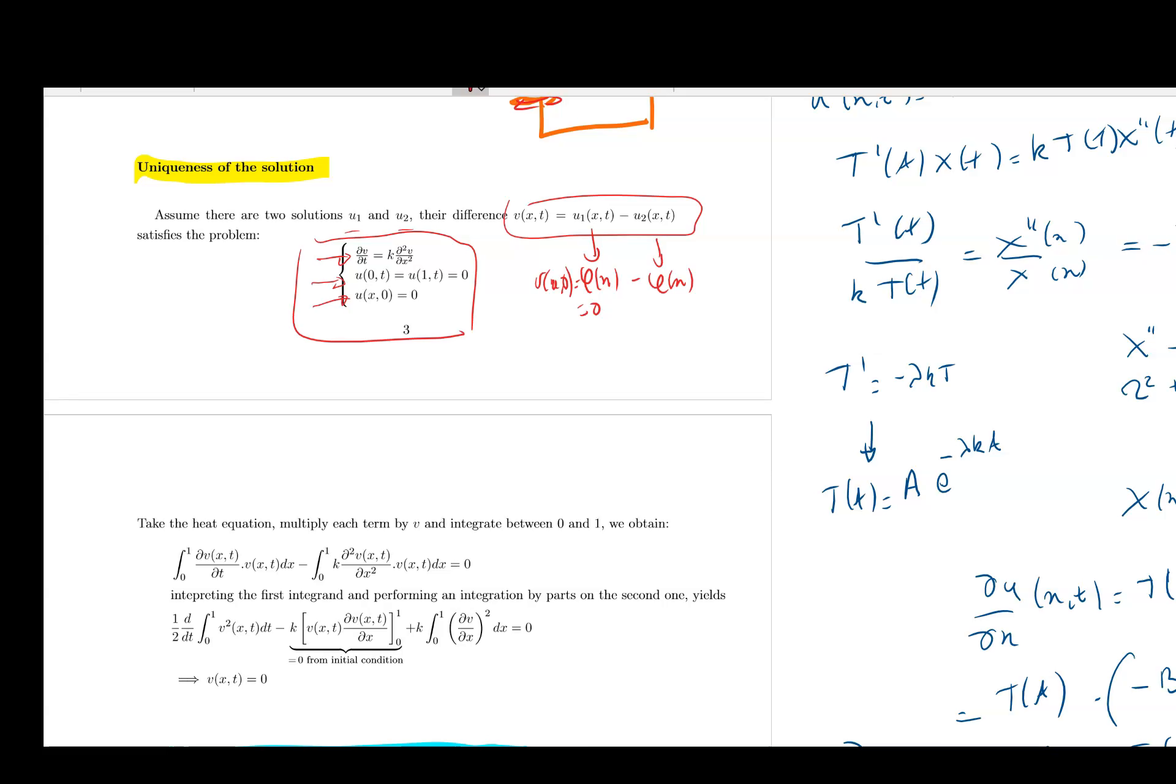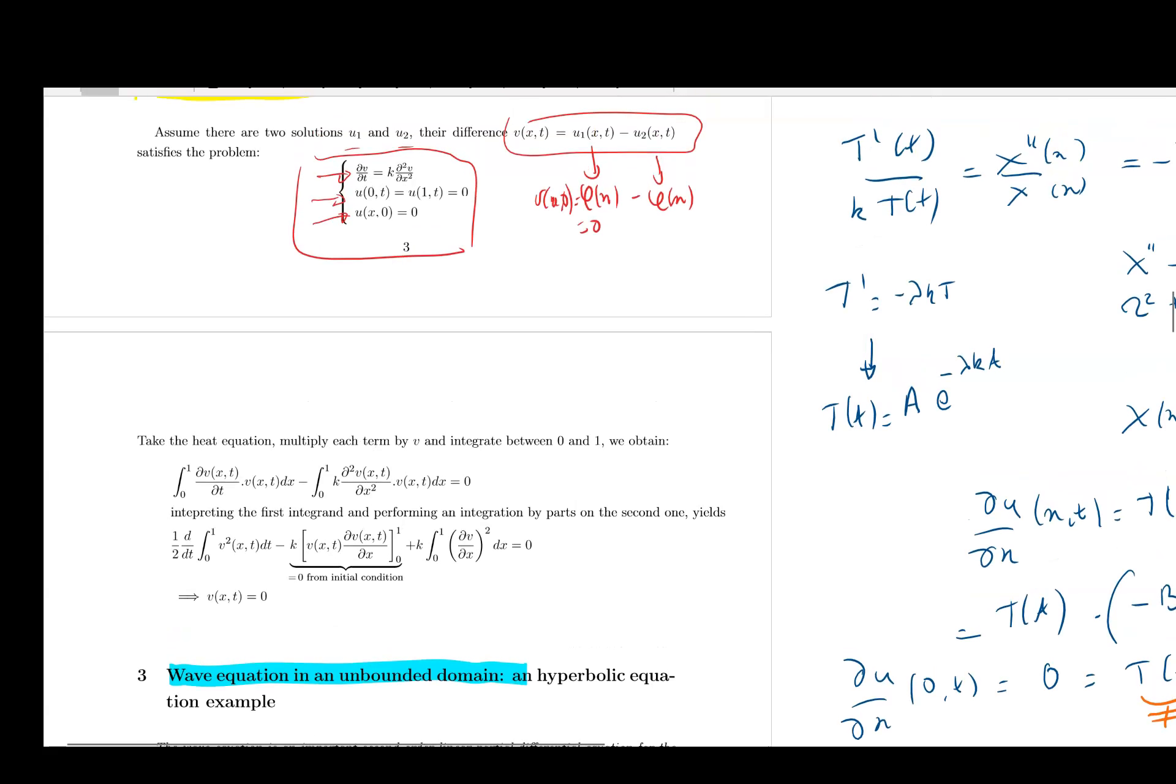So either you can solve again the equation and show that zero was a solution. That's fine, but that's not going to prove that it's unique. What we can do is that you take again the same equation. So dv over dt, and on the other side, we get k d²v over dx². And we multiply each term by v. And we integrate between zero and one with respect to x. So we get these equations. So one side minus the other side is equal to zero.